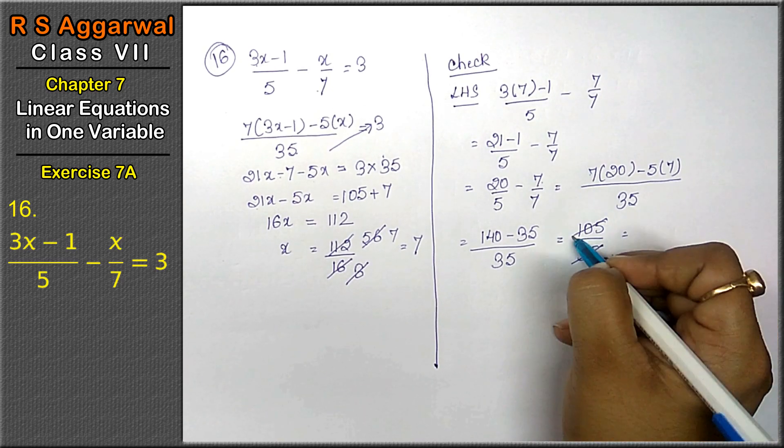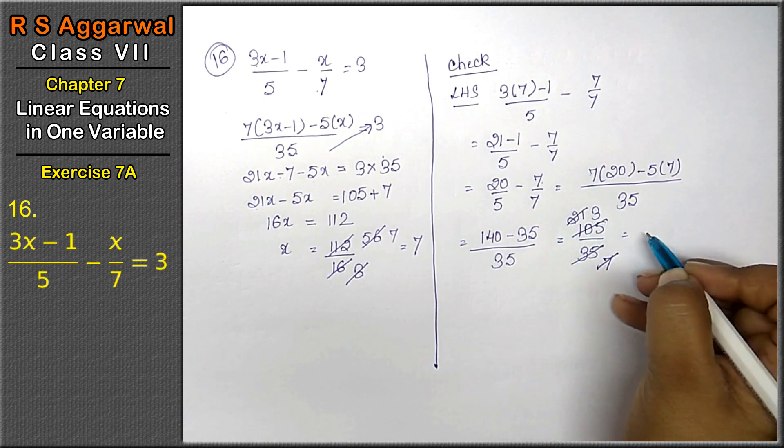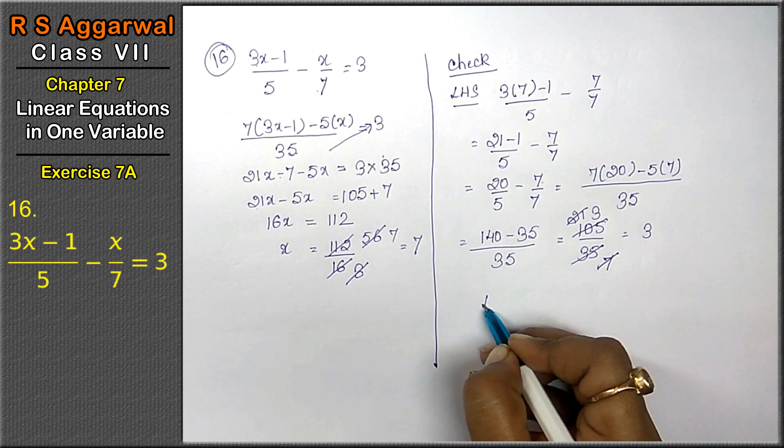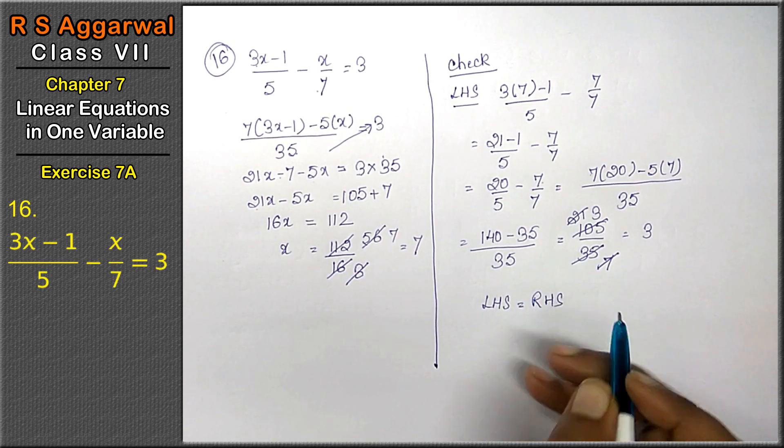That means 35. 5, 7's are 35. 5, 2's are 10. 5, 1's are 5. 7, 1's are 7. 7, 3's are 21. 3 is the answer. That means left-hand side is equals to right-hand side.